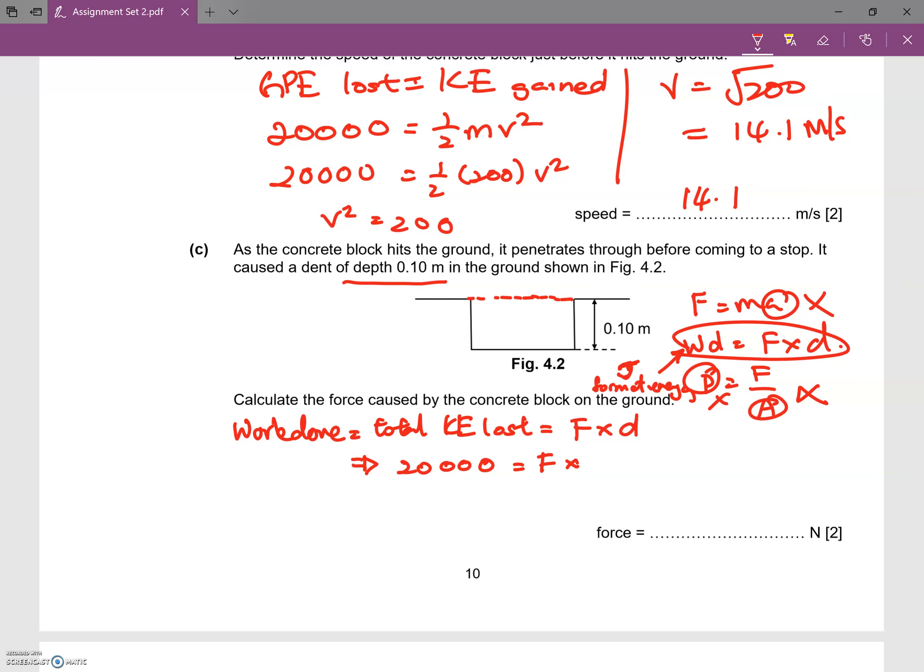So 20,000 divided by 0.10, F equals 200,000. Right?